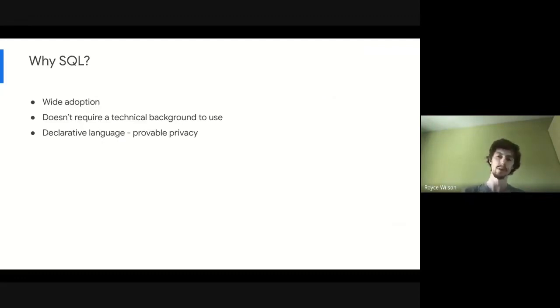But beyond the usability perspectives, SQL is great when we're talking about differential privacy because it's a declarative language. You can represent your query using a relational algebra expression, and we can then prove that that relational algebra expression satisfies our definition of differential privacy. So there's a number of advantages to why SQL is good for these use cases.